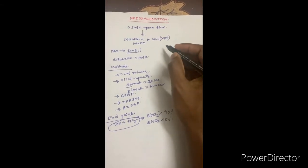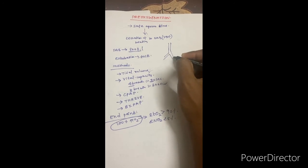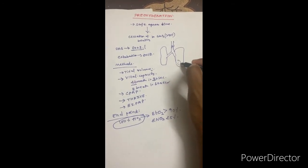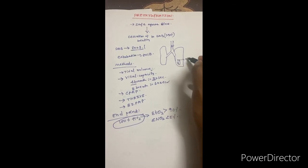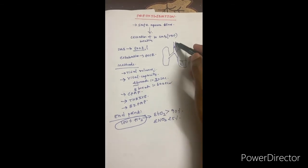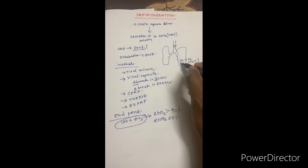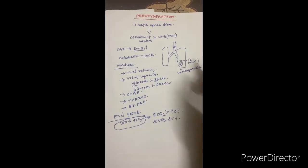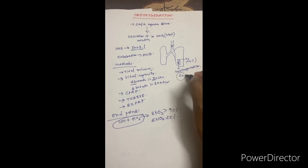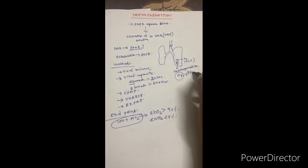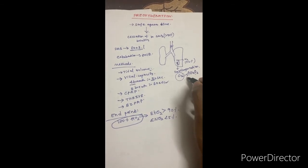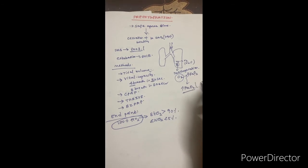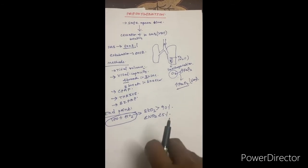In room air, a patient breathes 21% oxygen, and the alveoli are mainly made up of nitrogen at approximately 76%. Pre-oxygenation is majorly about replacing this nitrogen — effective denitrogenation — to increase the alveolar oxygen fraction. This increases the alveolar oxygen tension, which in turn increases the partial pressure of oxygen in the blood, allowing the patient to withstand desaturation for a longer time.